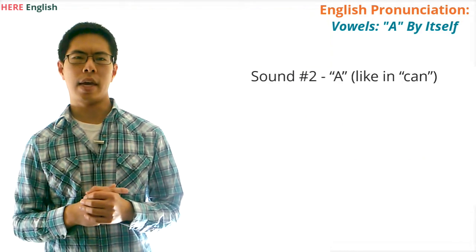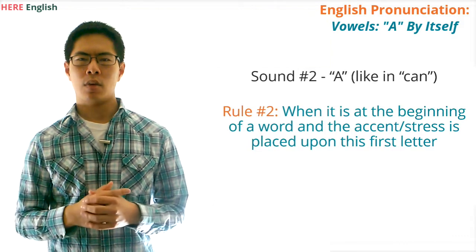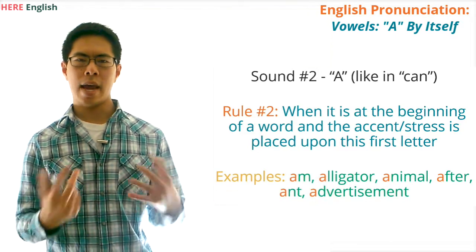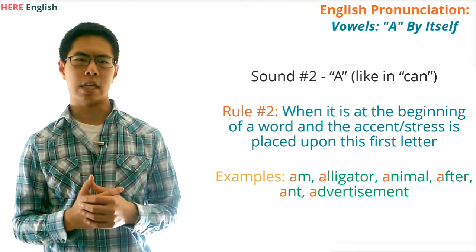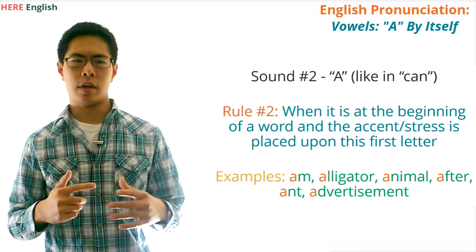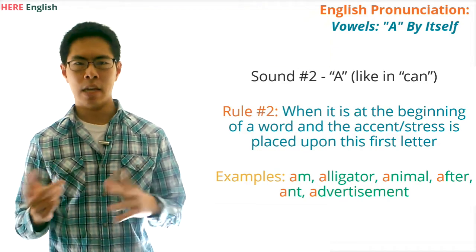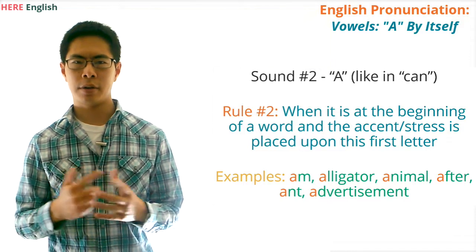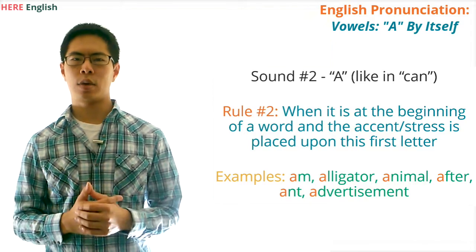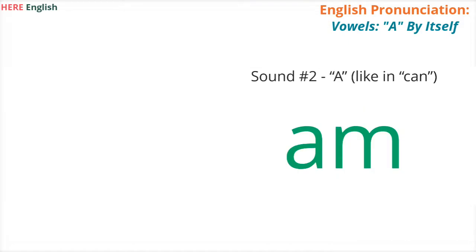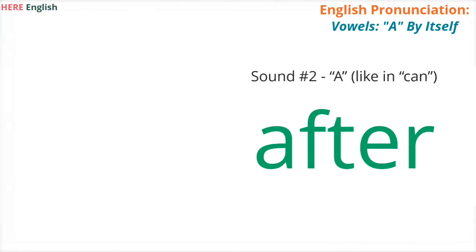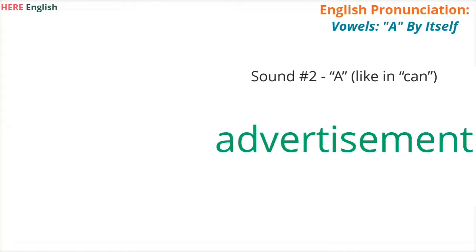Here's the second rule for when the vowel A will sound like A: the vowel A will sound like A when it is at the beginning of a word and the accent or stress is placed upon this first letter. Examples of words with this rule are am, alligator, animal, after, ant, and advertisement. We would say alligator and not alligator or alligator. We would say animal and not animal. We would say after and not after. We would say advertisement and not something like advertisement. Now, practice saying these words: am, alligator, animal, after, ant, advertisement.